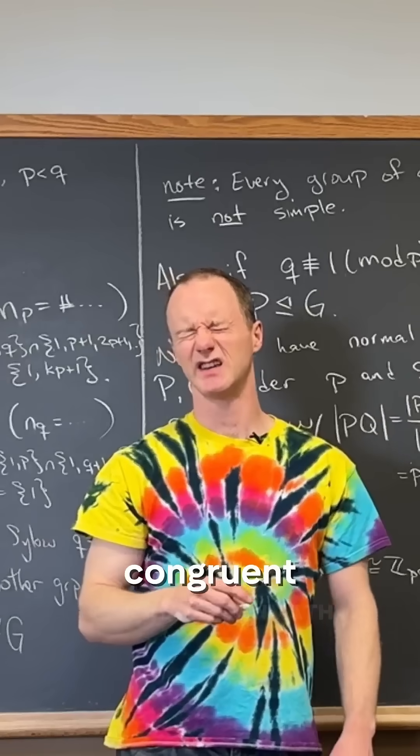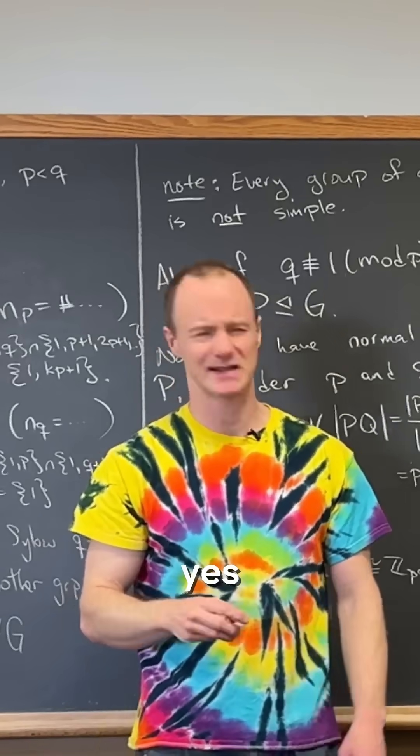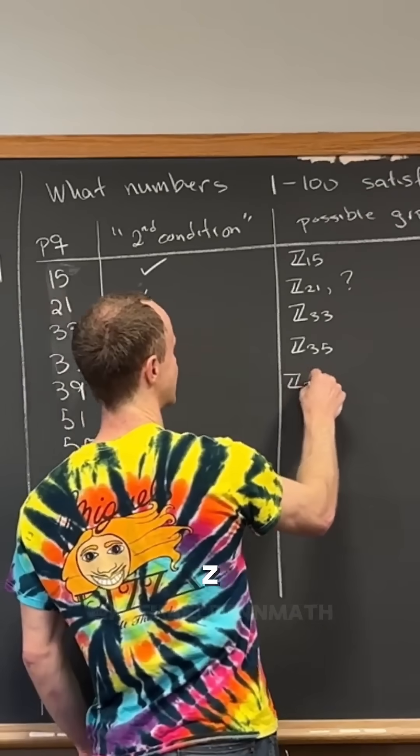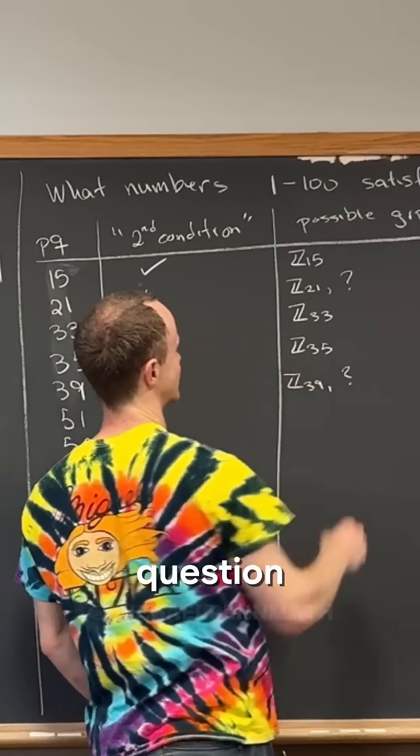39. Is 13 congruent to one mod three? Yes. So it doesn't satisfy. So that means we get Z39 and then question mark, right?